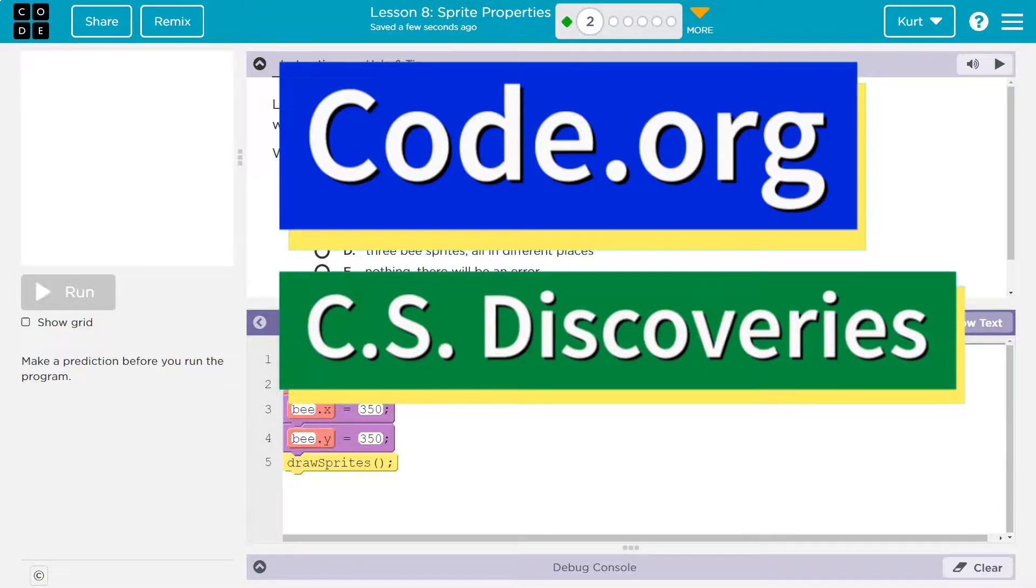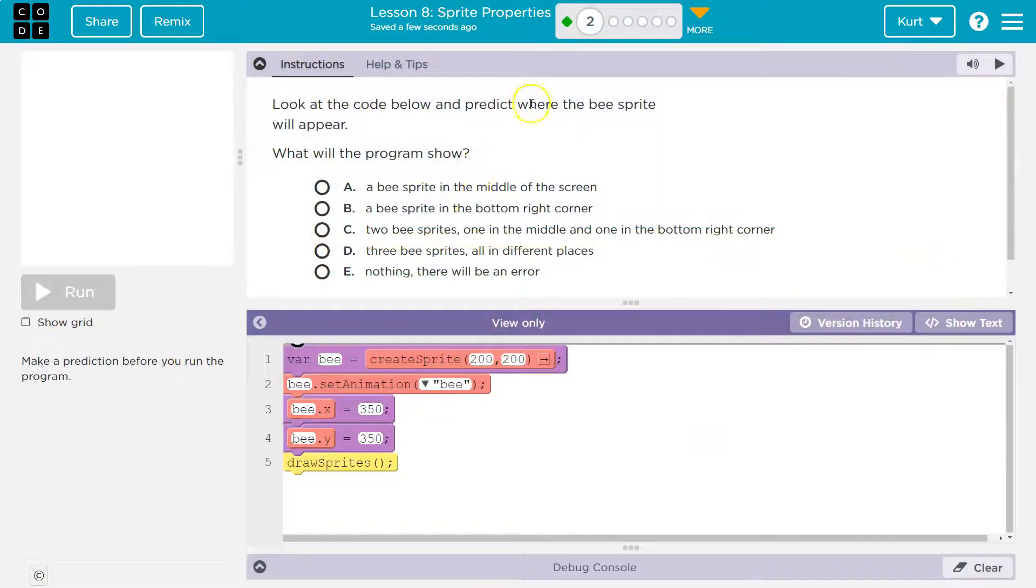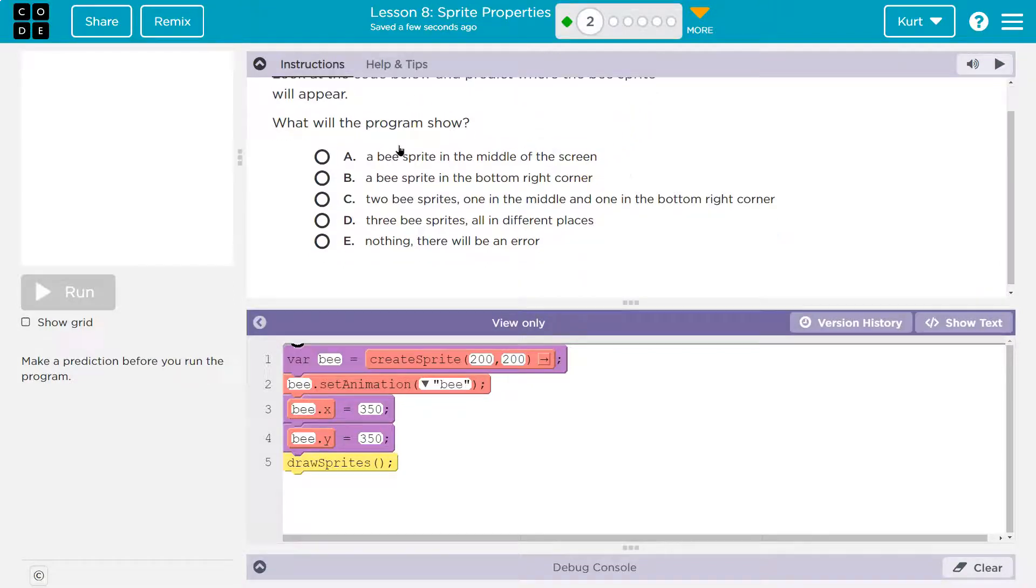This is code.org. Let's see what this is. Look at the code below and predict where the B sprite will appear. What will the program show?